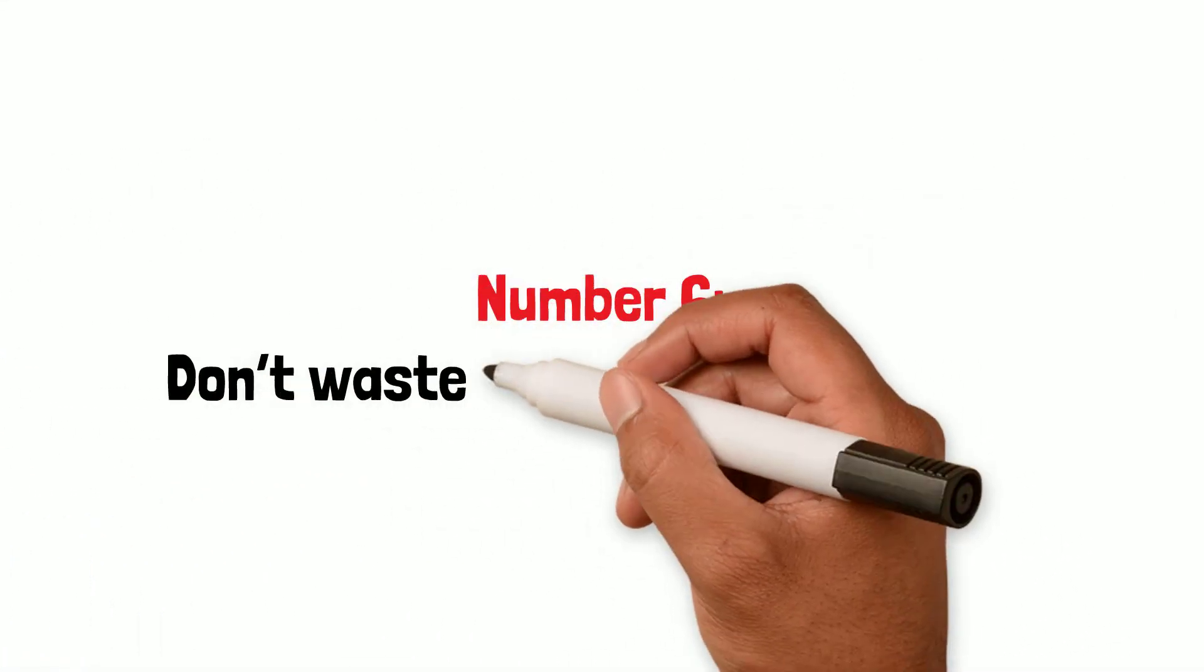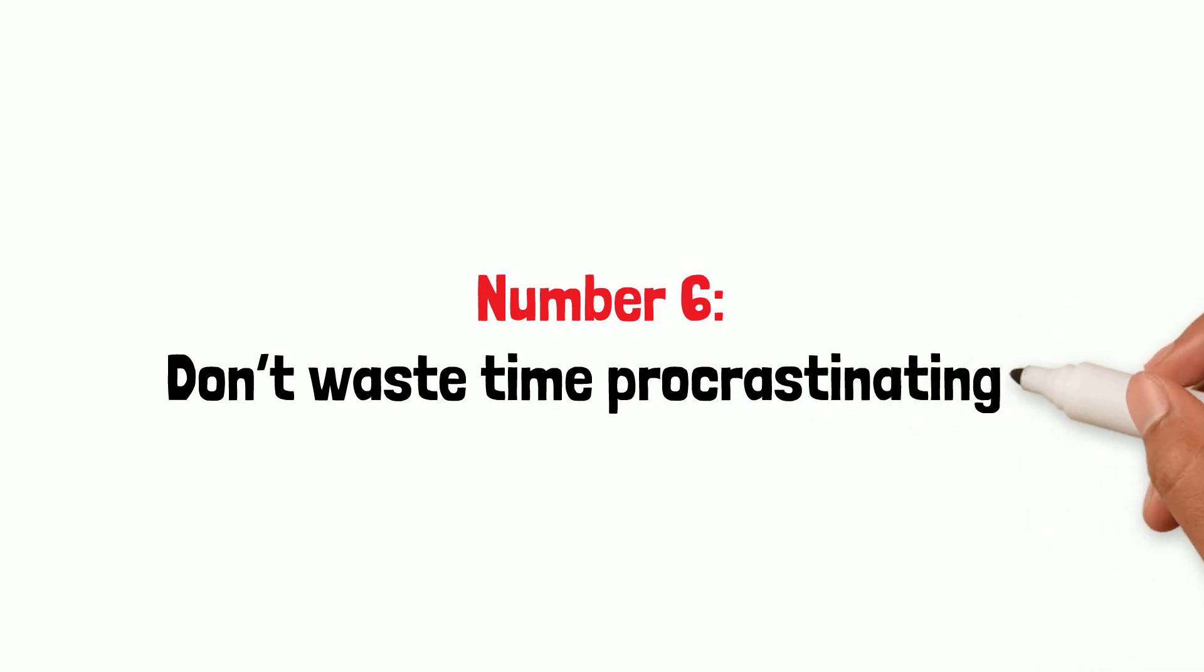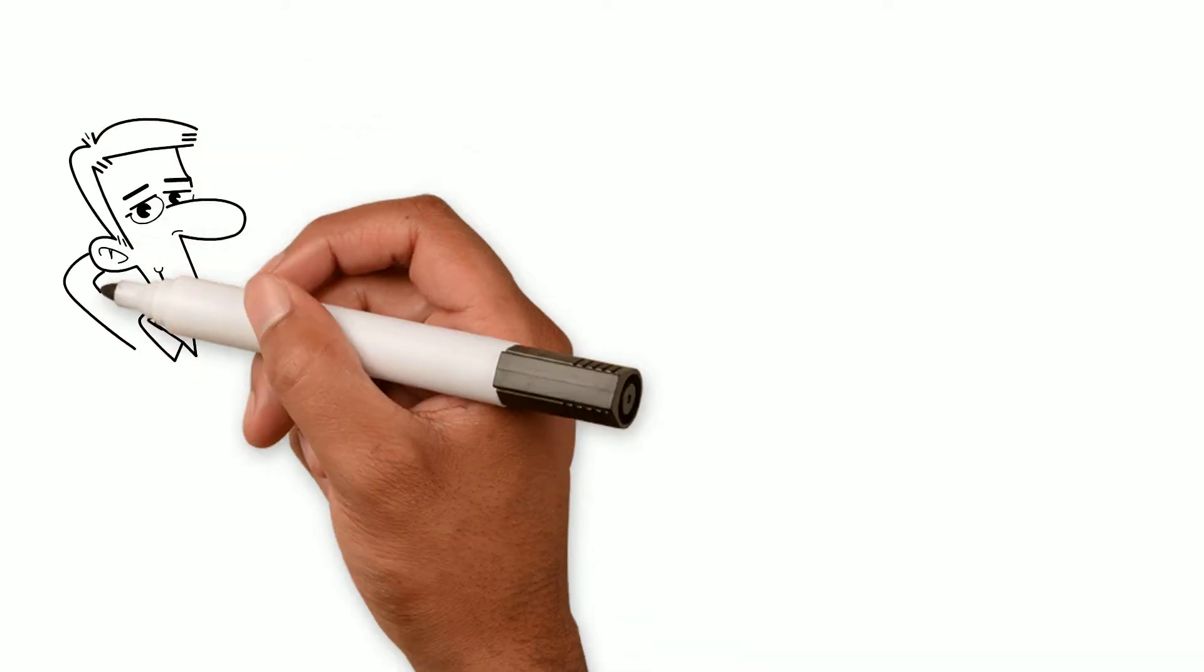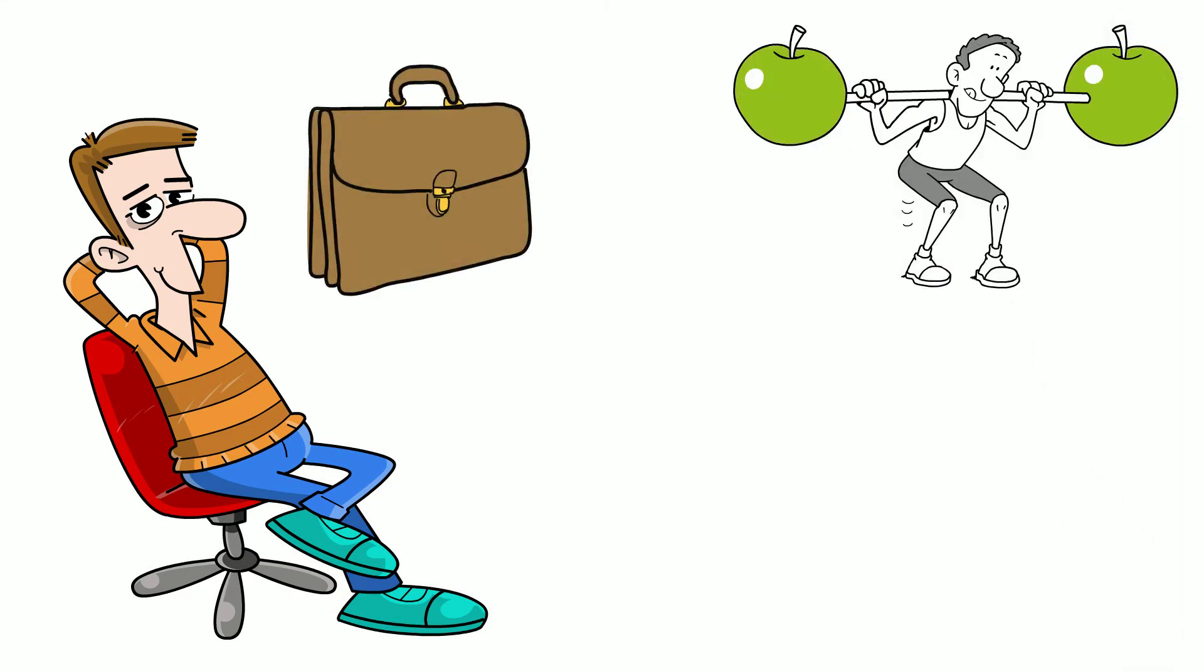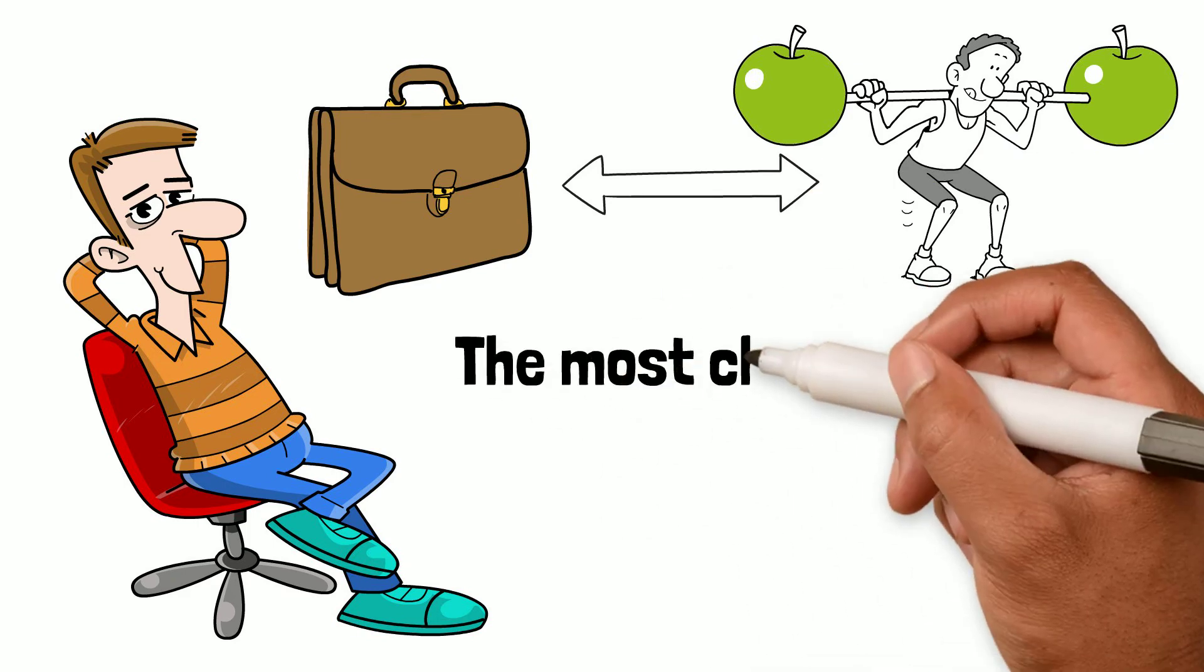Number six: don't waste time procrastinating. We all need time to relax. Part of living a healthy and sustainable life is down to maintaining a work-life balance that works for you.